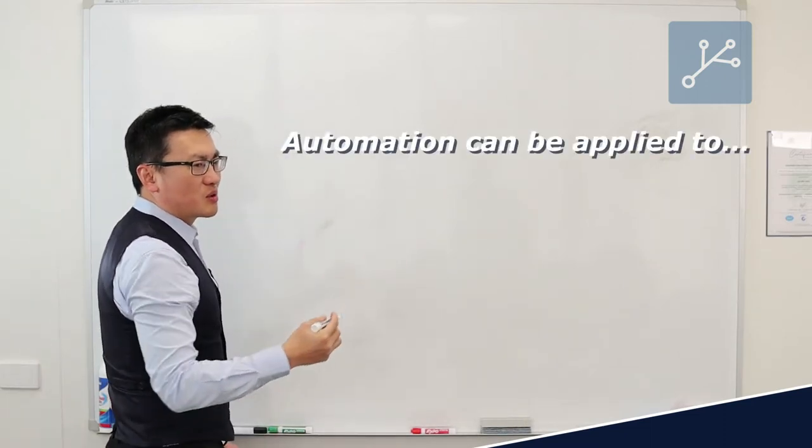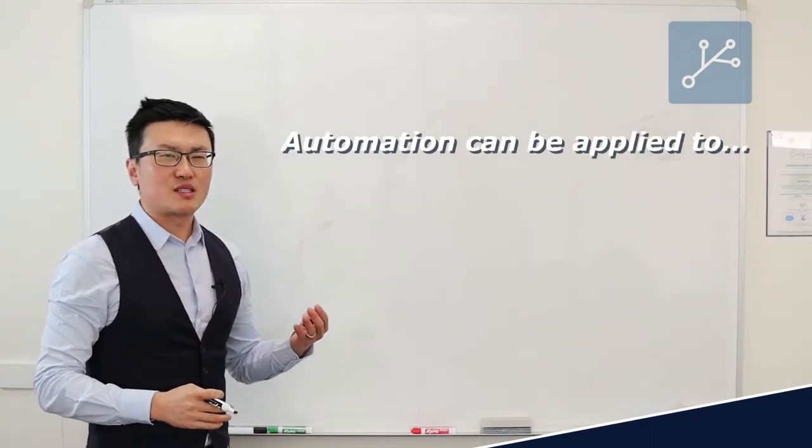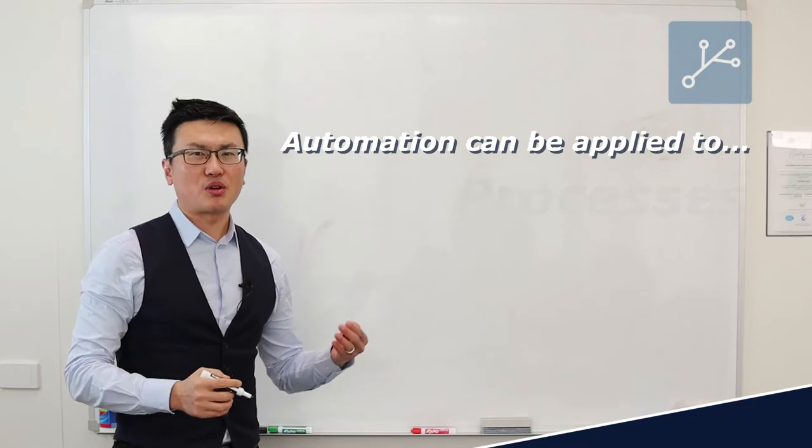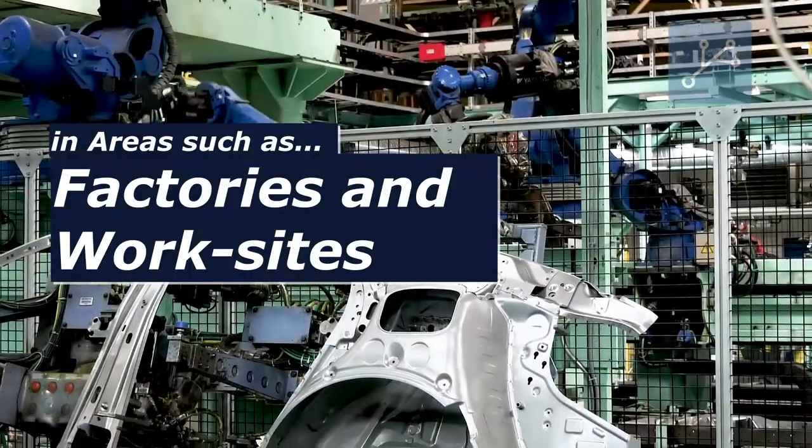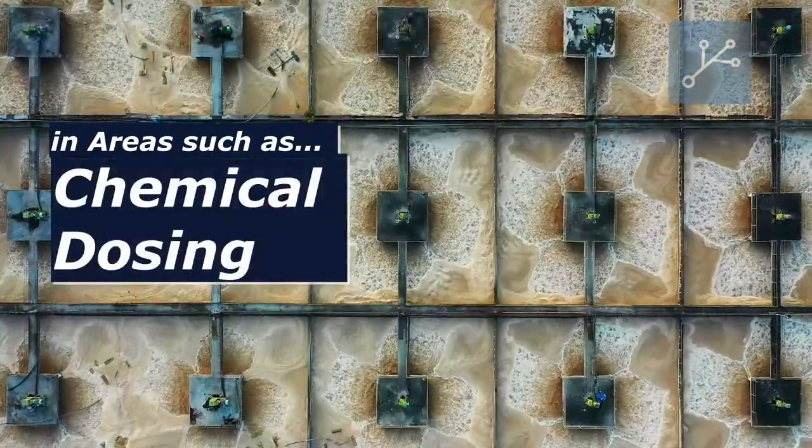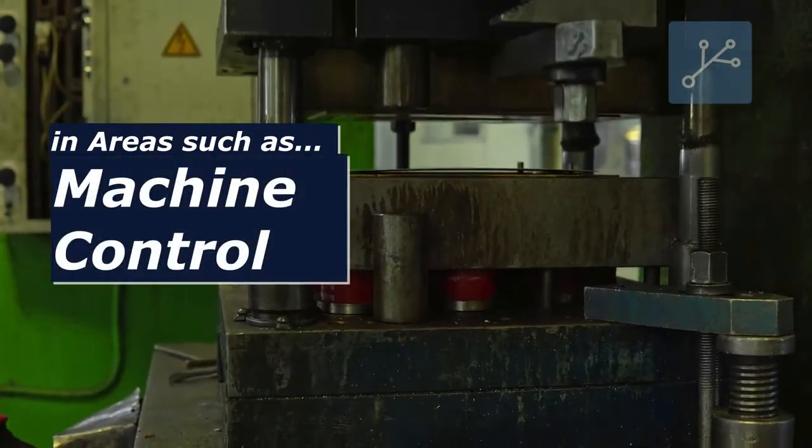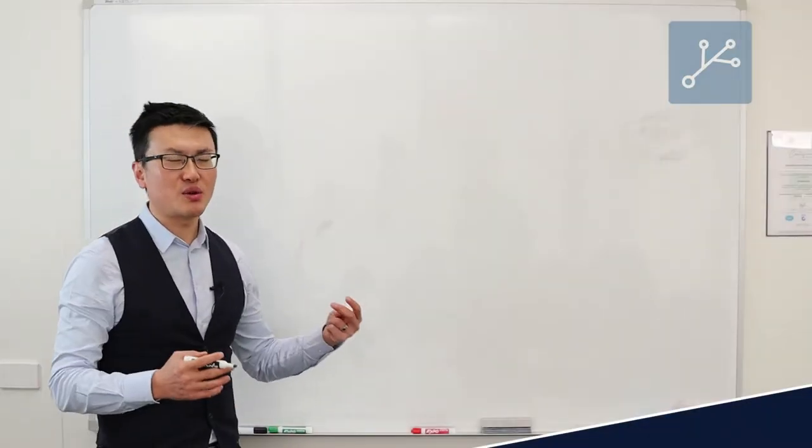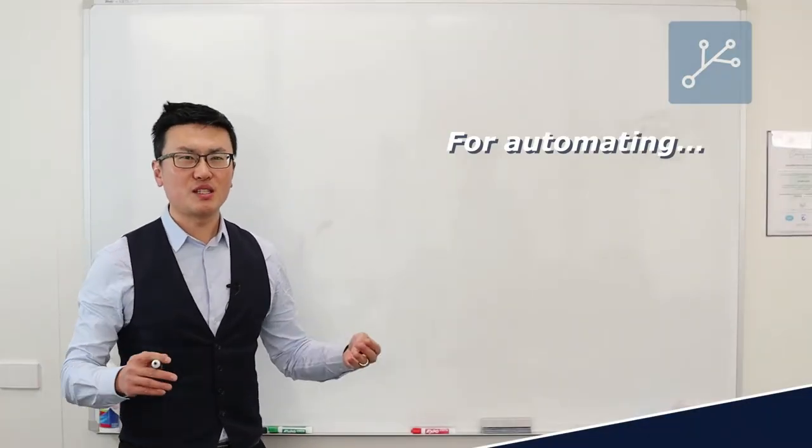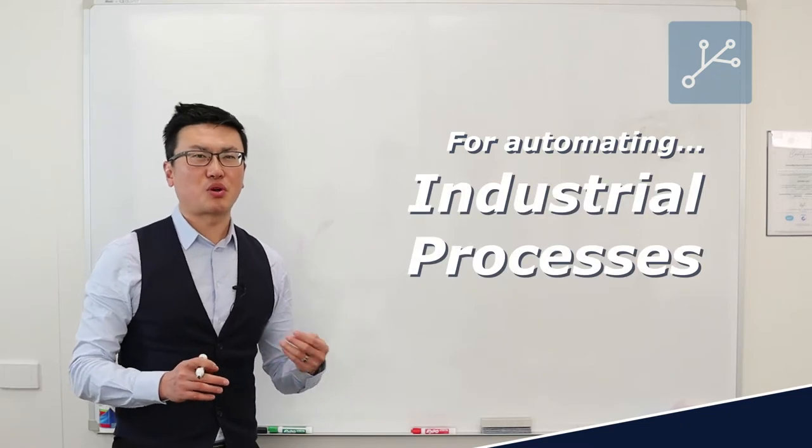Nowadays automation refers to automating processes such as a factory or site, chemical dosing process, or machine control process. So automation is a generic term for automating industrial processes.